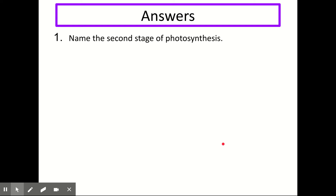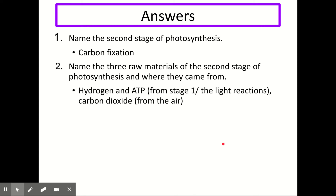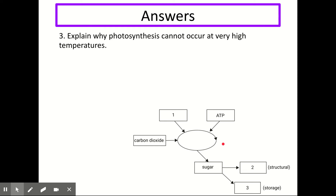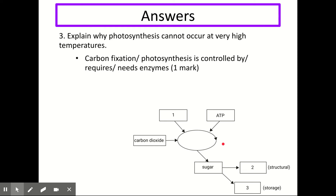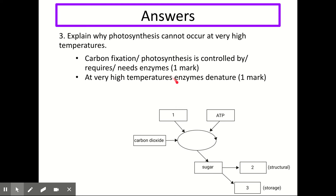Question 1: name the second stage of photosynthesis — carbon fixation. Number 2: name the three raw materials of stage 2 and where they came from — hydrogen and ATP came from stage 1 (the light reactions), and carbon dioxide comes from the air. Number 3: state the product of stage 2 — sugar. Number 4: explain why photosynthesis cannot occur at very high temperatures. This is a two-mark question. First, carbon fixation is enzyme-controlled — that series of reactions in carbon fixation is enzyme-controlled. Second mark: at very high temperatures, enzymes would denature. So photosynthesis can't occur at high temperatures because it is controlled by enzymes and enzymes denature at very high temperatures.